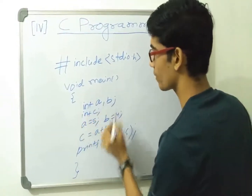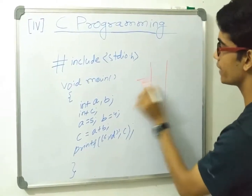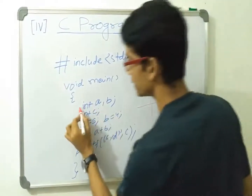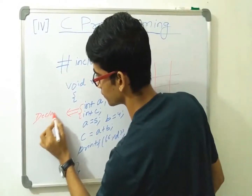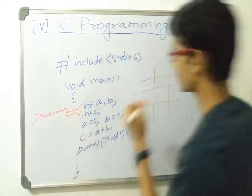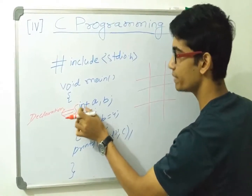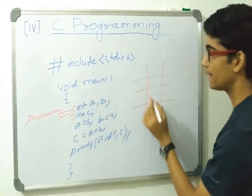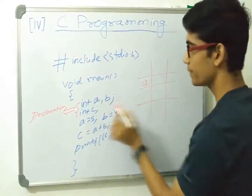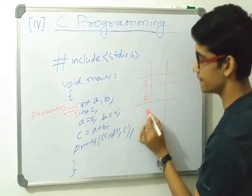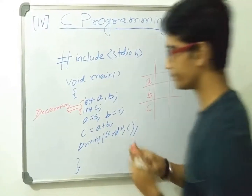Don't worry about the program being complicated. When we write int a, b, we are allocating some memory — this is known as declaration. This int is a primary or primitive data type, that is integer. So a memory block named 'a' will be assigned, then 'b' and 'c'. When we write a = 5, this is called assignment.